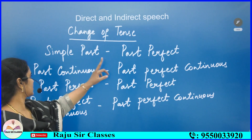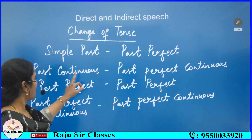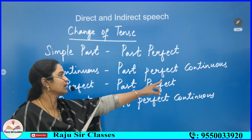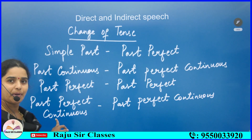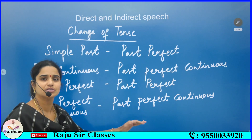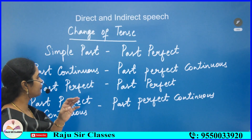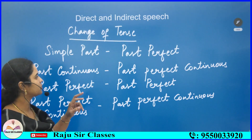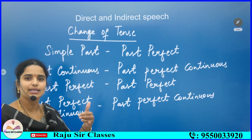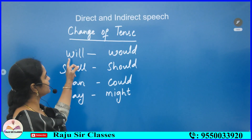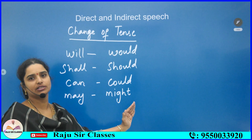Continuing the tense changes: simple past changes into past perfect. Past continuous changes into past perfect continuous. Past perfect stays the same — no change. Past perfect continuous also stays the same — no change. So among the four past forms, only the first two change: simple past becomes past perfect, and past continuous becomes past perfect continuous. Also, 'will' changes into 'would', 'shall' into 'should', 'can' into 'could', and 'may' into 'might'.